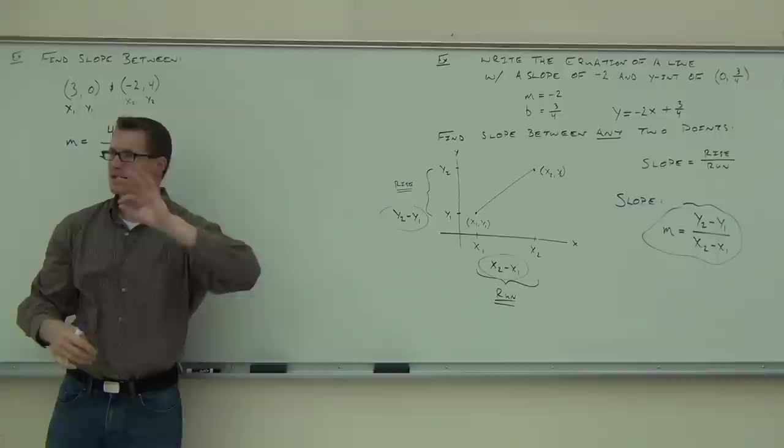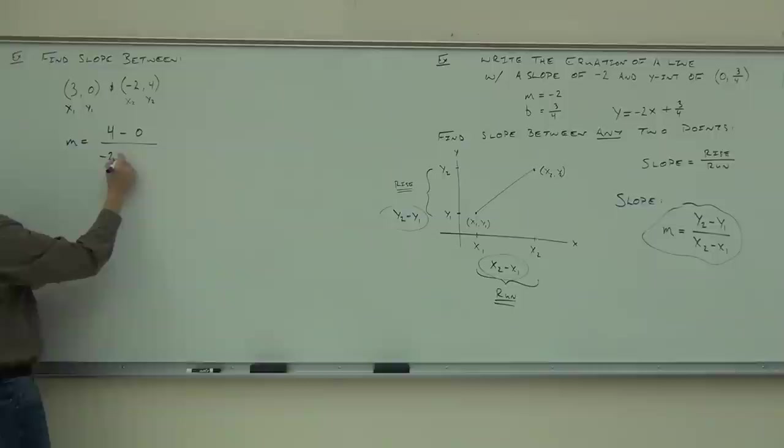So we do 4 minus 0 and over negative 2 minus 3. That's why we write this out — so we can see it on the paper. We write negative 2 and then put the minus sign and what comes next.